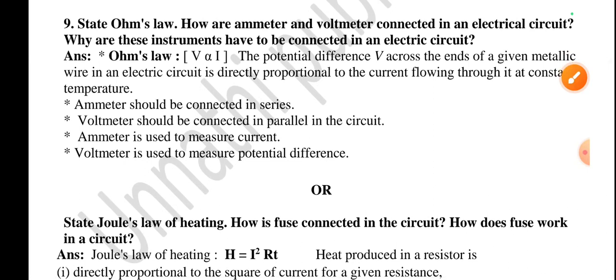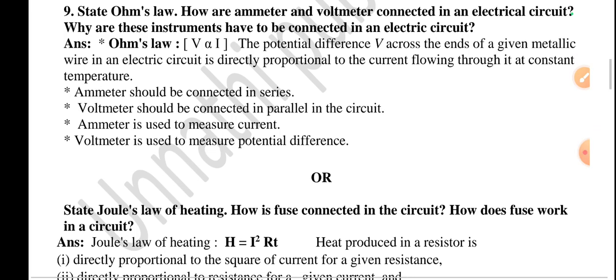Question number nine: State Ohm's law. How are ammeter and voltmeter connected in an electrical circuit? Why do these instruments have to be connected in an electric circuit? Ohm's law: V is proportional to I. The potential difference V across the ends of a given metallic wire in an electric circuit is directly proportional to the current flowing through it at constant temperature.